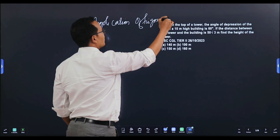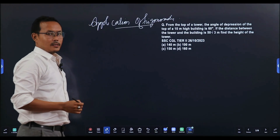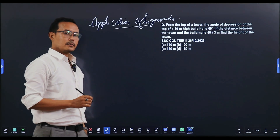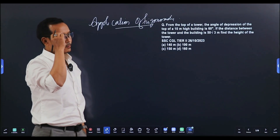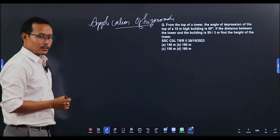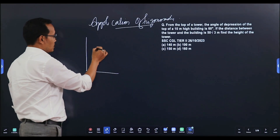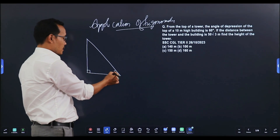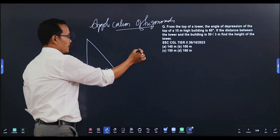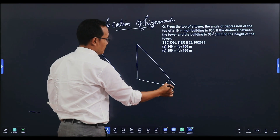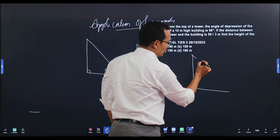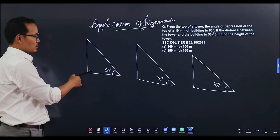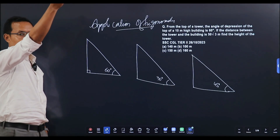Trigonometry is applied here. The standard angle of trigonometry ratio is applied. The first one is the right triangle of trigonometry. Remember the right triangle — the standard angles are 30 degrees, 60 degrees, and 45 degrees.